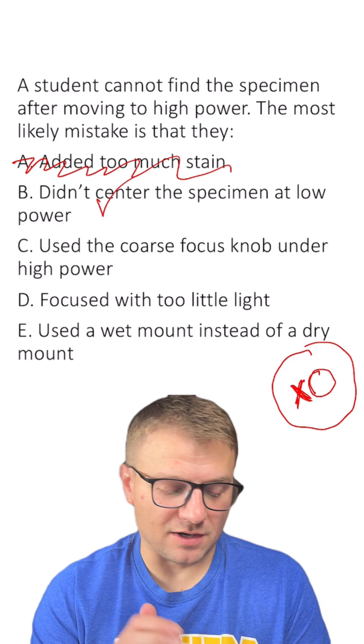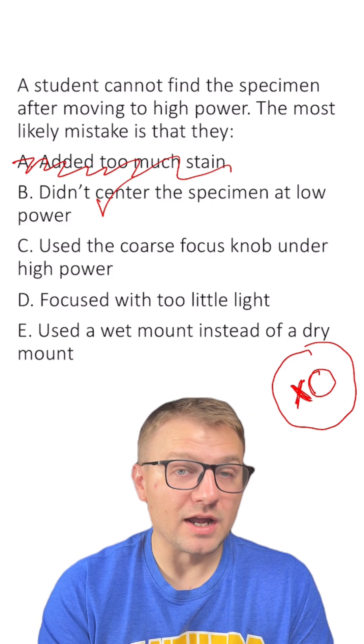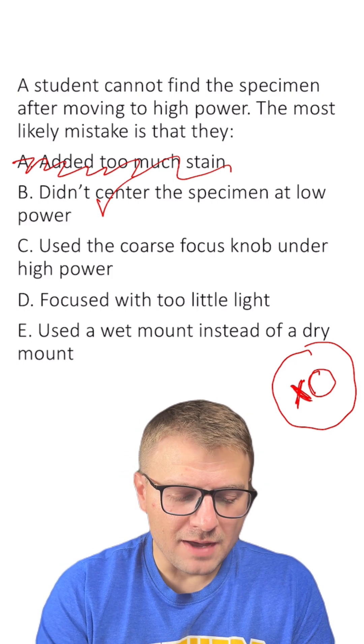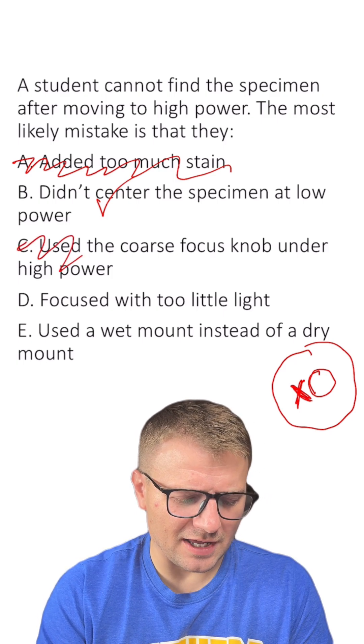but let's go on and make sure the others aren't a better answer. C, they used the coarse focus knob under the high power. Now, that is definitely a no-no, but it's not the reason why they can't find it, so I don't think C is the right answer.